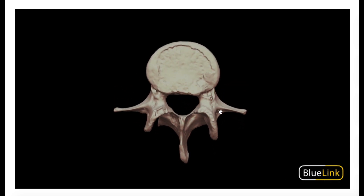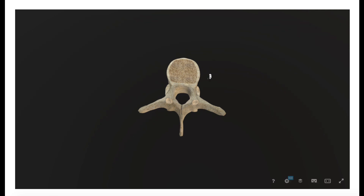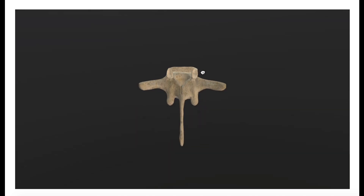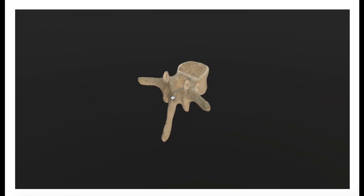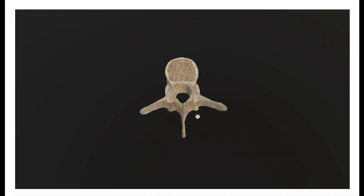When we look at the transverse process in the lumbar vertebra, they seem to project almost perpendicularly with respect to the spinous process — going out directly in the left and right lateral directions. When we compare that to the thoracic vertebra, they're angled a little bit more posteriorly. You should be able to identify the spinous process going down, and the right and left transverse processes going laterally.